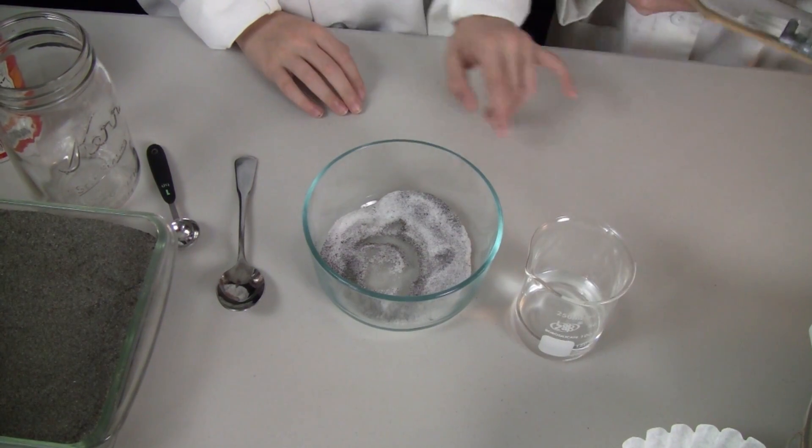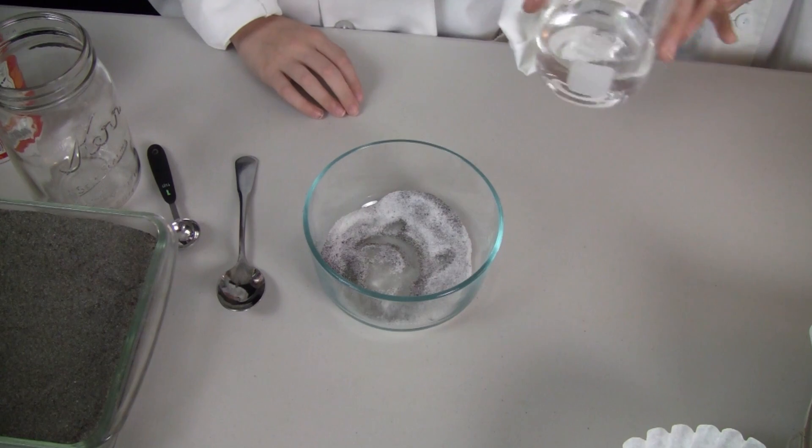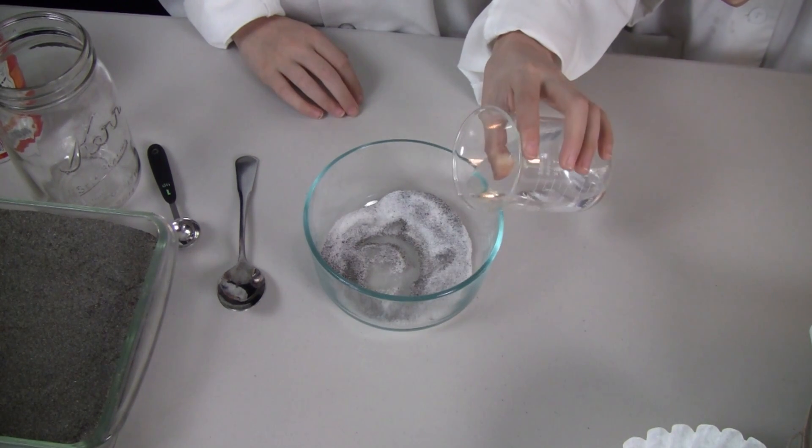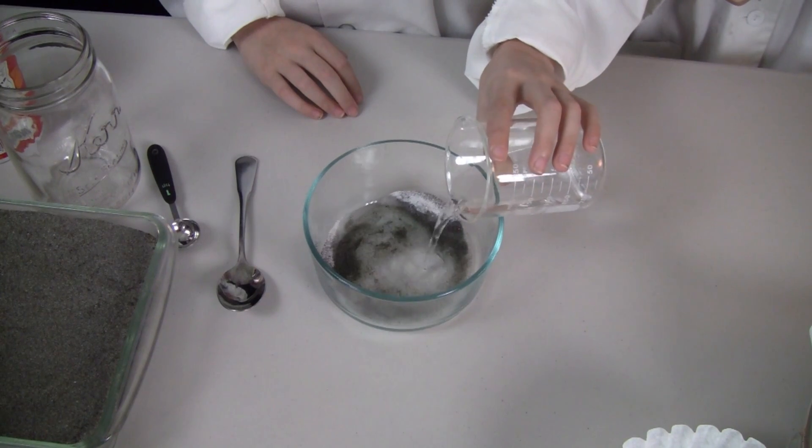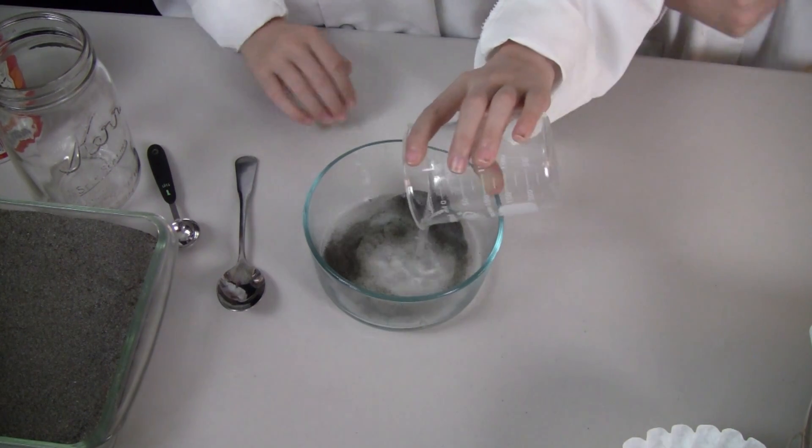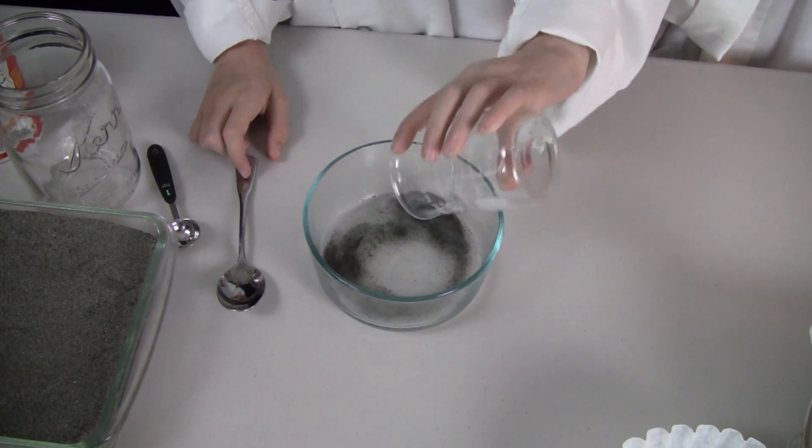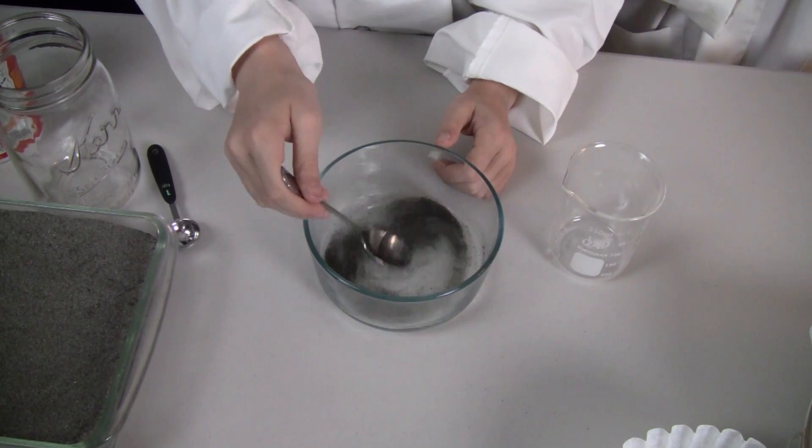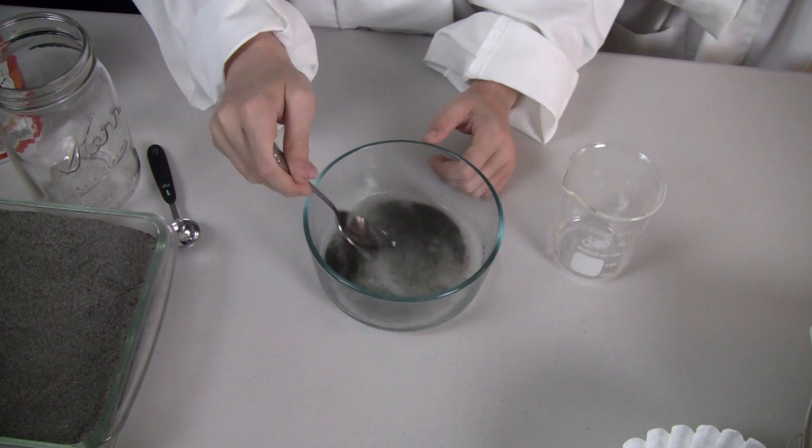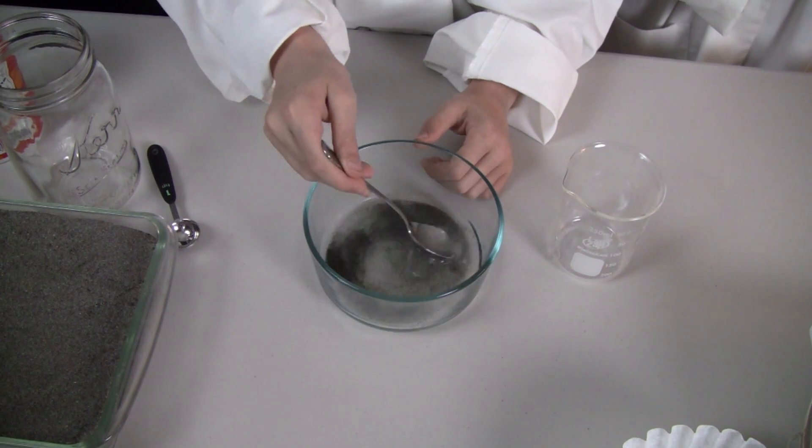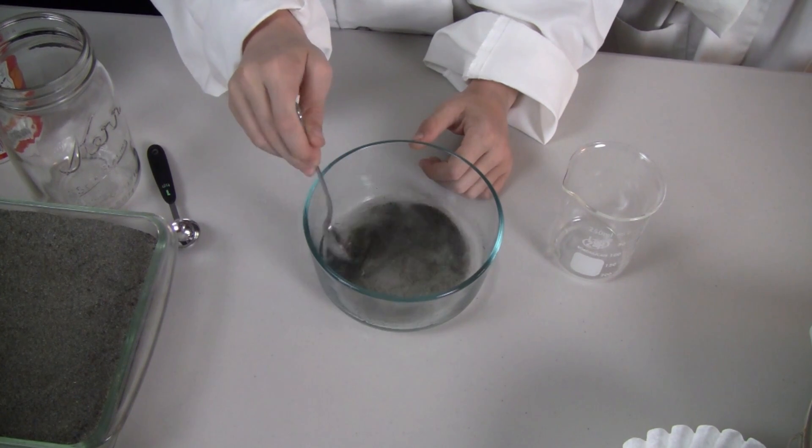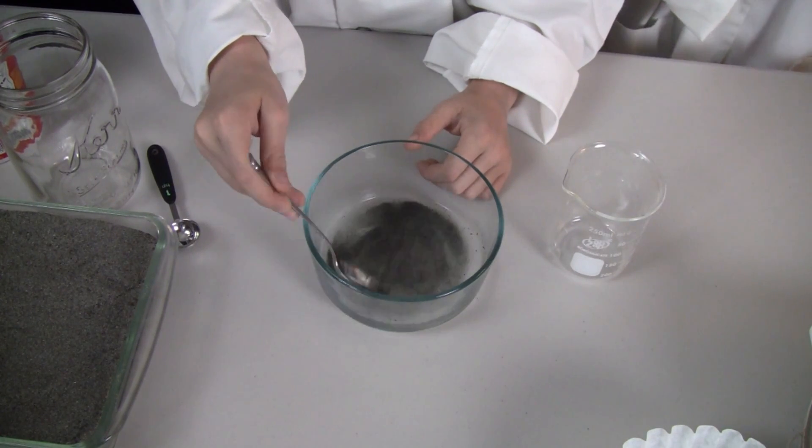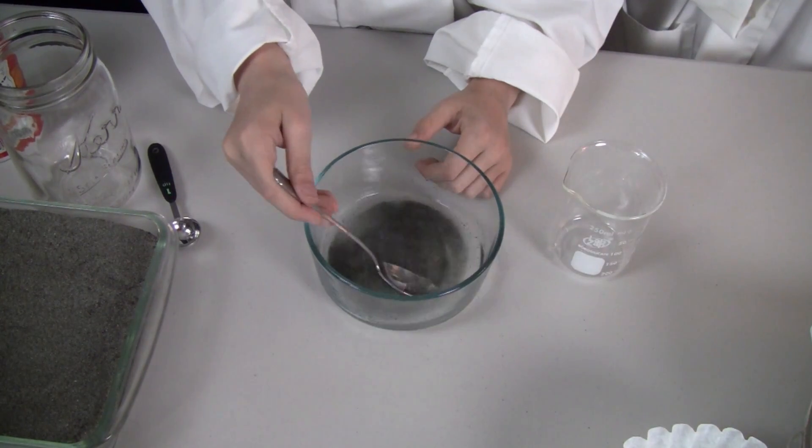Now we are getting 100 milliliters of water and pouring it into the sand and salt mixture. And we are going to stir it for one minute. Go ahead and stir it. You might want to set a timer for one minute. Stir until that salt dissolves in the water. You will notice that the sand is not dissolving.